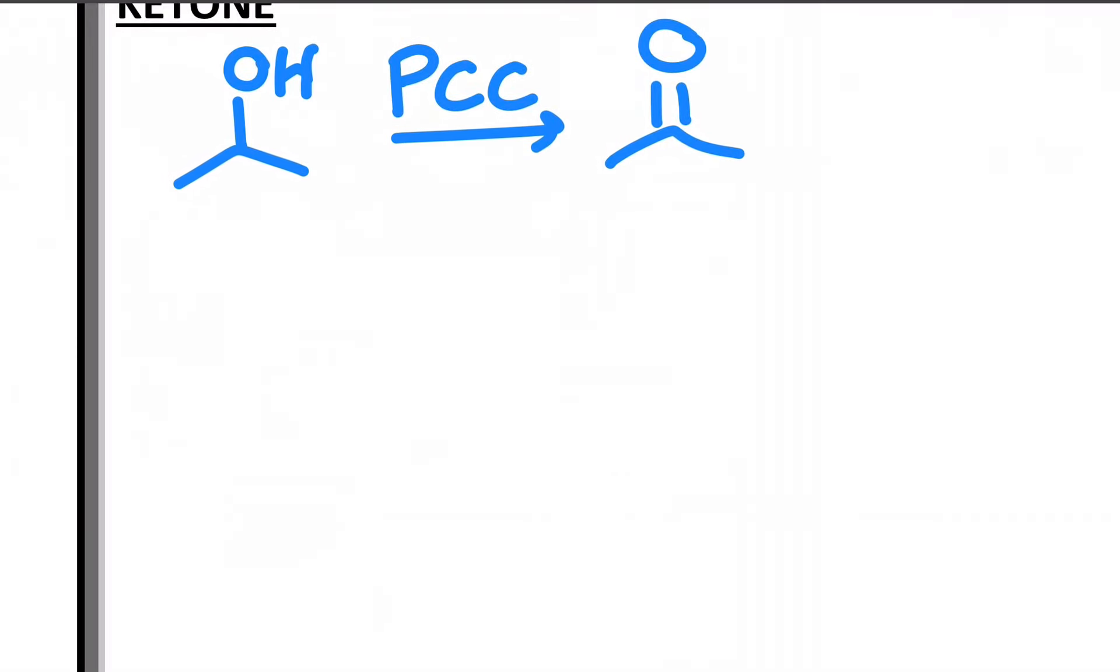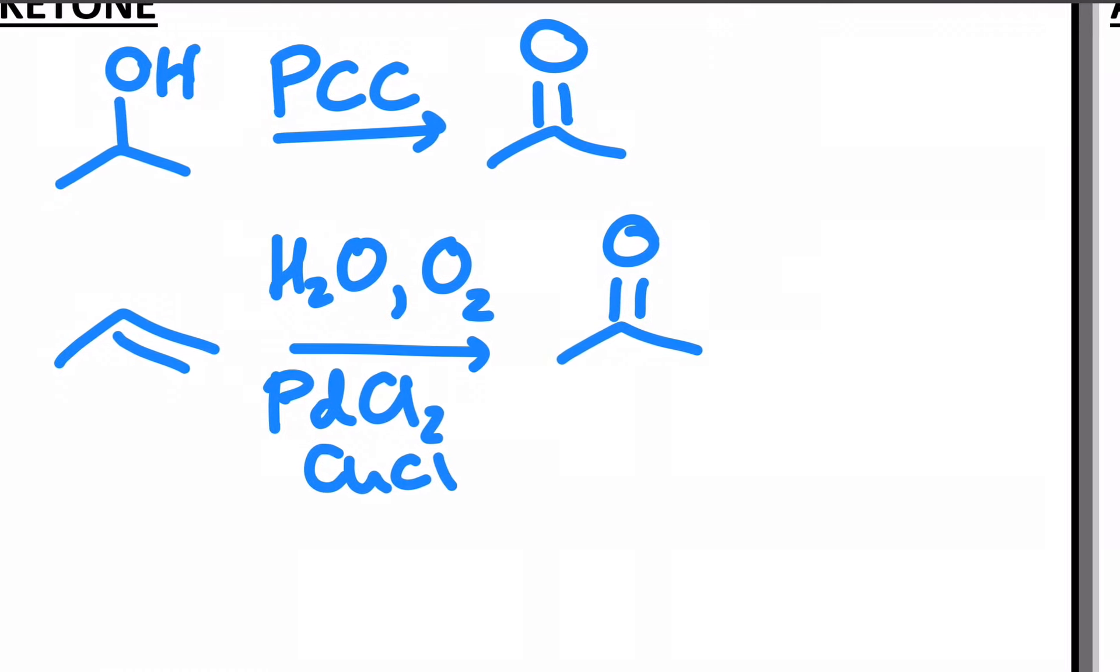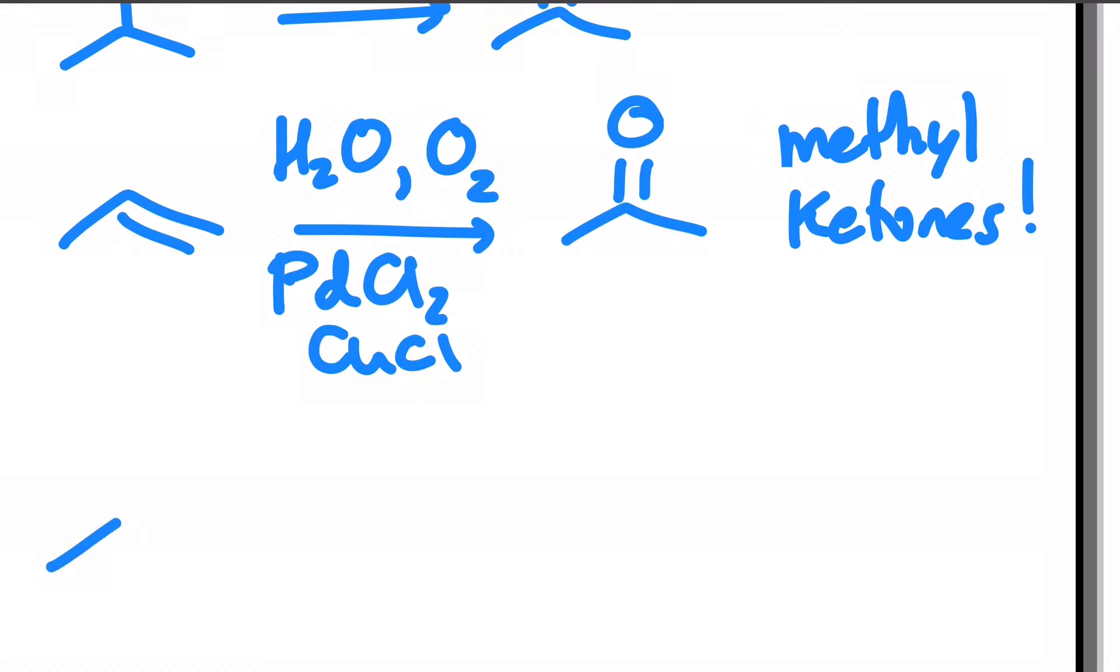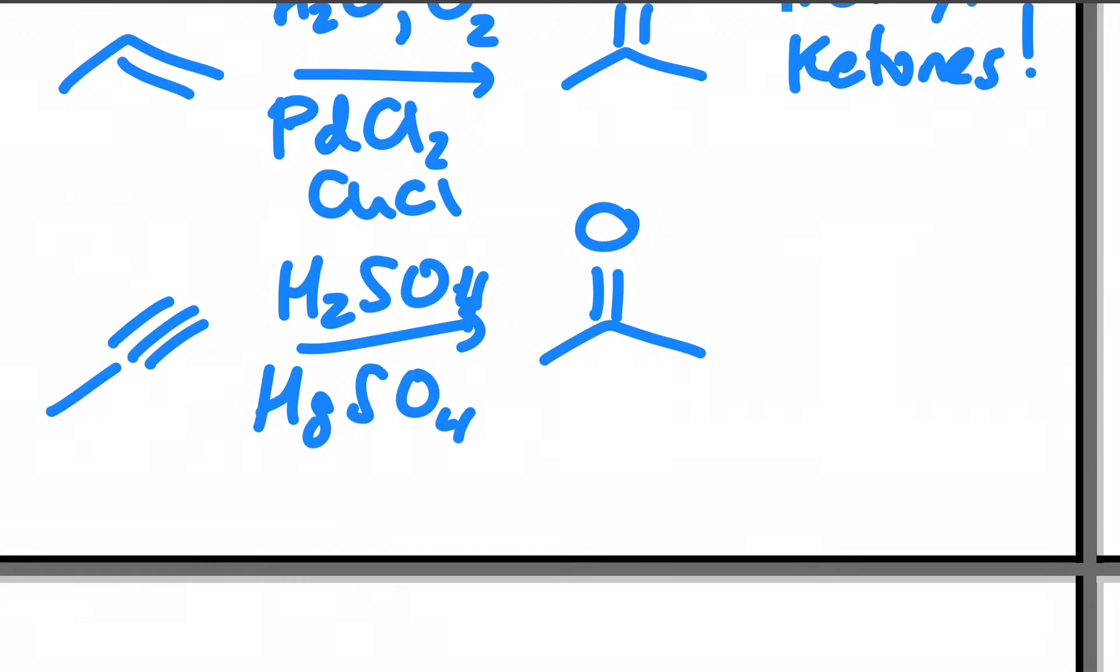Ketones, starting with Orgo 1 chemistry, we can oxidize secondary alcohols with things like PCC. We can make specifically a methyl ketone with one of my favorites, the Wacker oxidation. That involves water and oxygen in the presence of palladium chloride and copper chloride, specific for a methyl ketone. Meaning it's got to be a terminal alkene and have a methyl in the end. We can also make ketones from hydration of alkynes, things just like sulfuric acid in the presence of mercuric sulfate. And one more, you can always ozonize the appropriate alkene. If it's substituted correctly, you'll get a ketone. This one would obviously give you a formaldehyde as well.